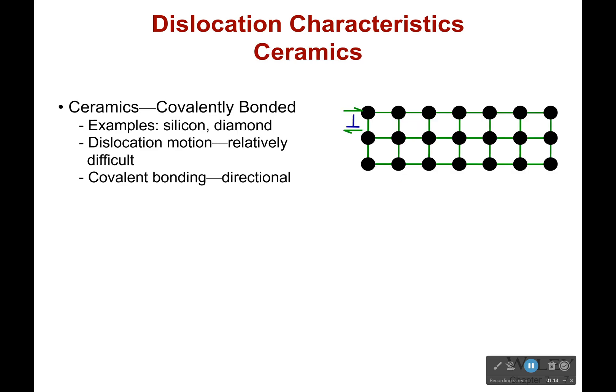Ceramics, though, are covalently bonded. Covalent bonds are strong — think diamond. Dislocation motion is relatively difficult because covalent bonding is directional. This atom and this atom are connected, but this atom and that one don't even see each other. So if you're going to break this bond, you're really going to break it, because these two are bonded together. It's not bonded with everything — it's only bonded to this one specific atom. And covalent bonds are very, very strong.